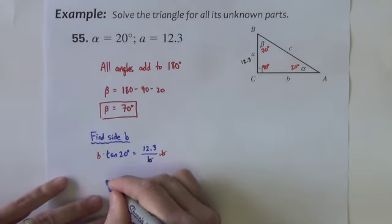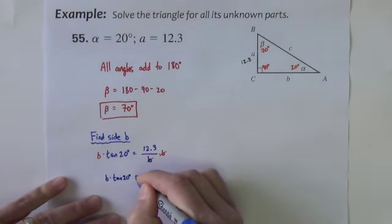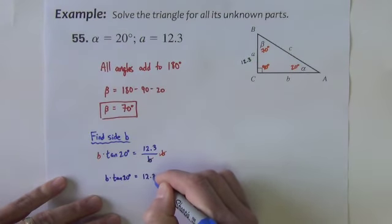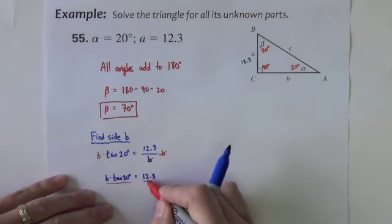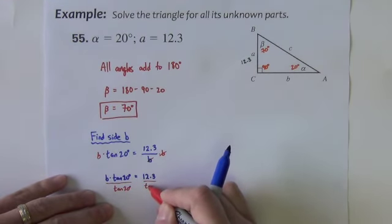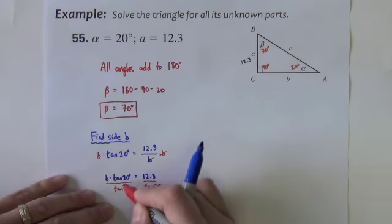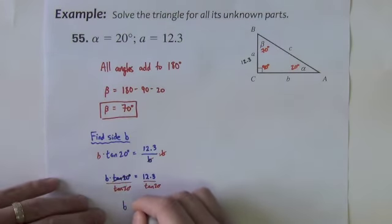So I would have B times the tan of 20 degrees equals 12.3. And then I would divide both sides by the tan of 20 degrees. And that would give me B solved for.